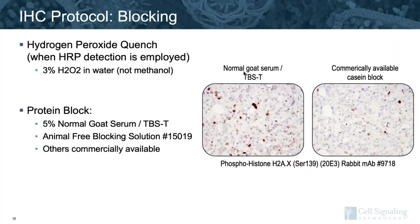Hydrogen peroxide quench should be included when HRP detection is employed. The reagent should be made up in water, not methanol, as methanol has been reported to damage certain epitopes. There can be differences in antibody performance depending on which blocking reagent is used. Blocking reagents that contain casein can result in weaker staining for some antibodies, notably phosphospecific antibodies. We routinely use 5% normal goat serum diluted in TBST, as our secondary antibody was produced in goat. We also have an animal-free blocking reagent that is plant-based; in side-by-side comparison, staining results were similar using this reagent versus goat serum.